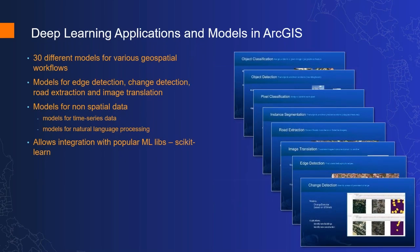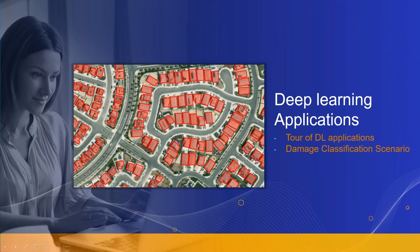Now let's see how deep learning integrates within ArcGIS. There are more than 30 different models targeted towards specific tasks, ranging from object detection to image classification to image enhancement, change detection and much more. While they're mostly imagery-related models, we also have models for non-spatial data such as text and tabular data. ArcGIS also enables integration with third-party deep learning frameworks and machine learning libraries. Let me switch to a demonstration where we can go over the key applications of deep learning in ArcGIS.